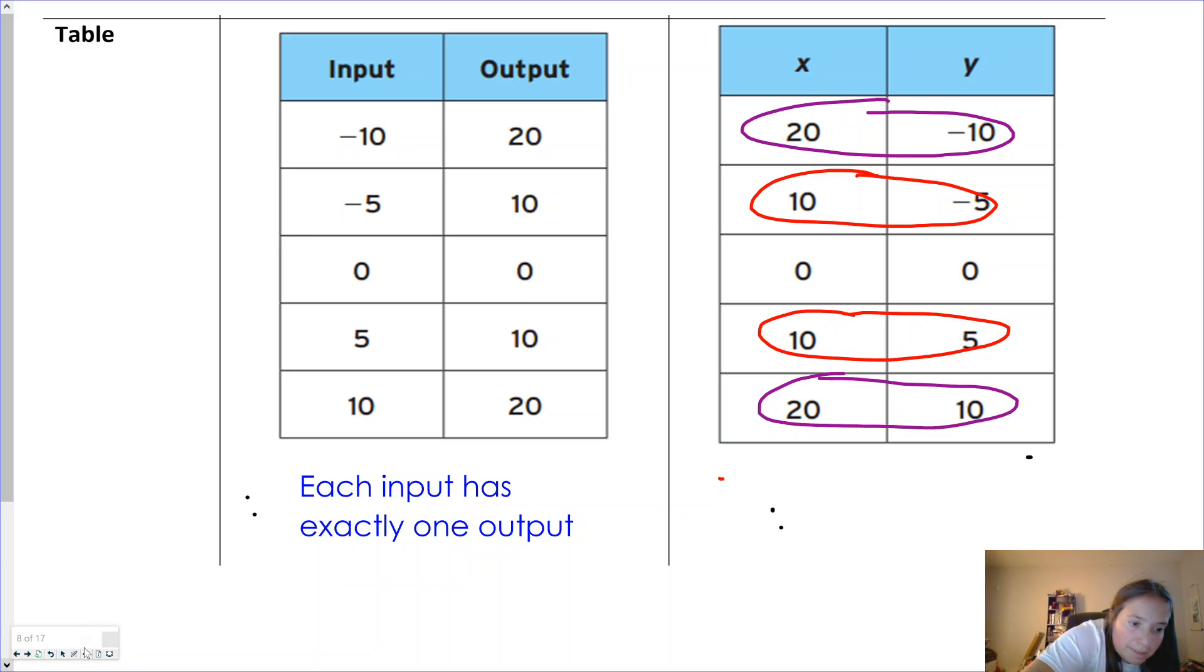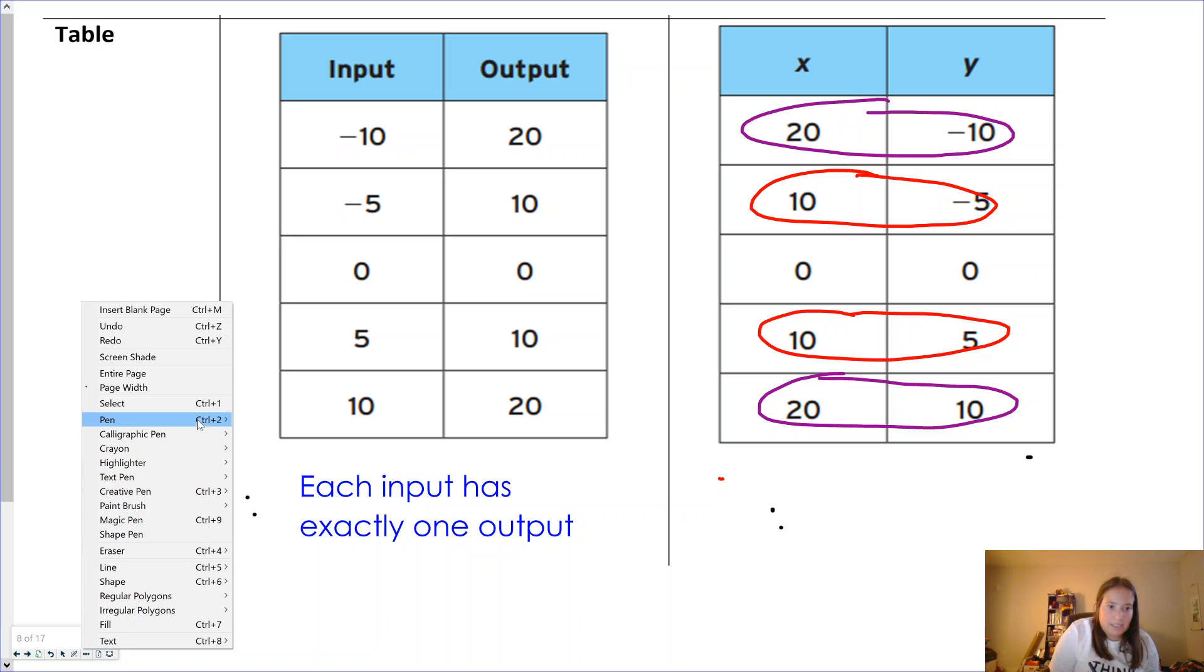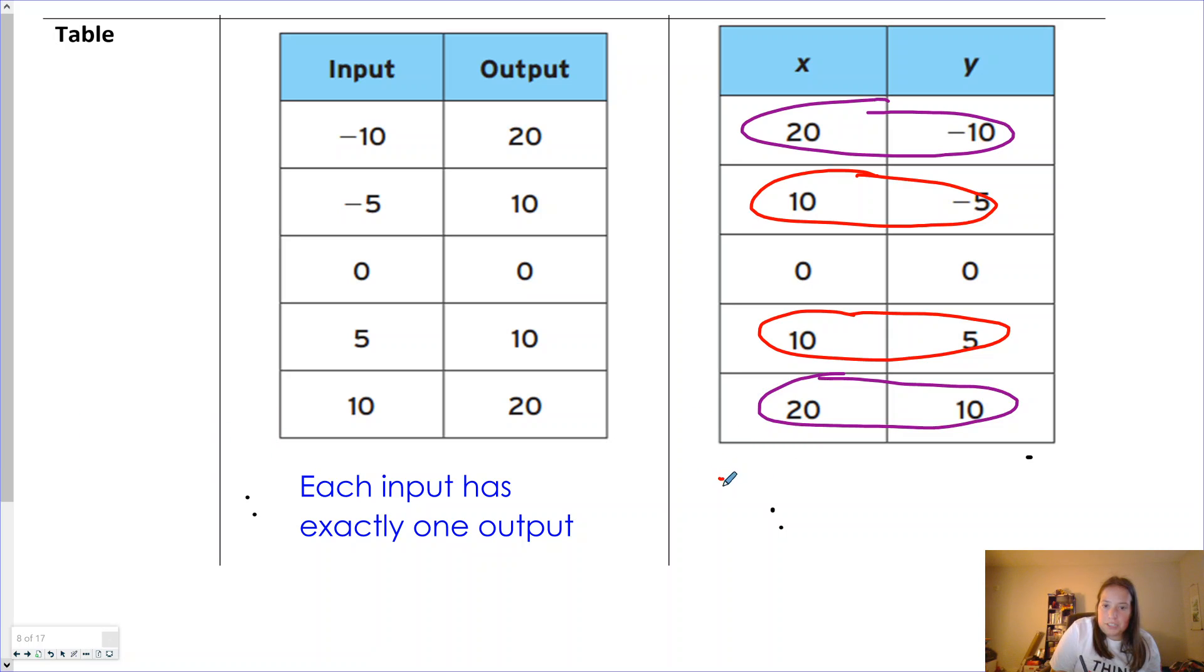So you would be able to define both of those issues. 10 has two outputs, -5 and 5, as well, 20 has two outputs, -10 and 10. Be specific. Tell me why it's not a function. It's not a function because an input has more than one output.